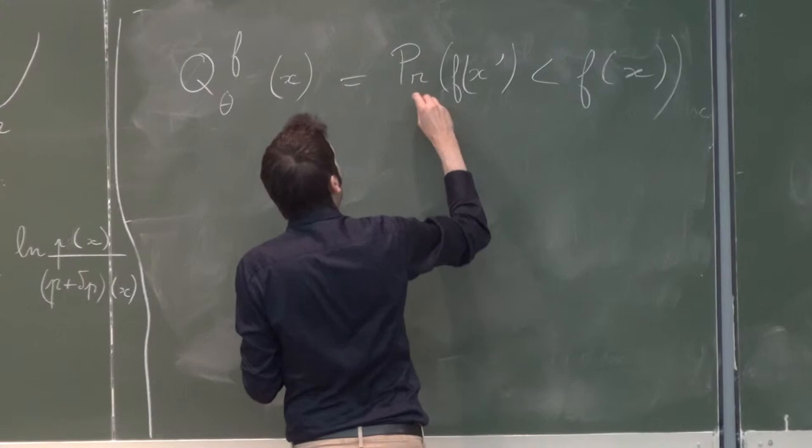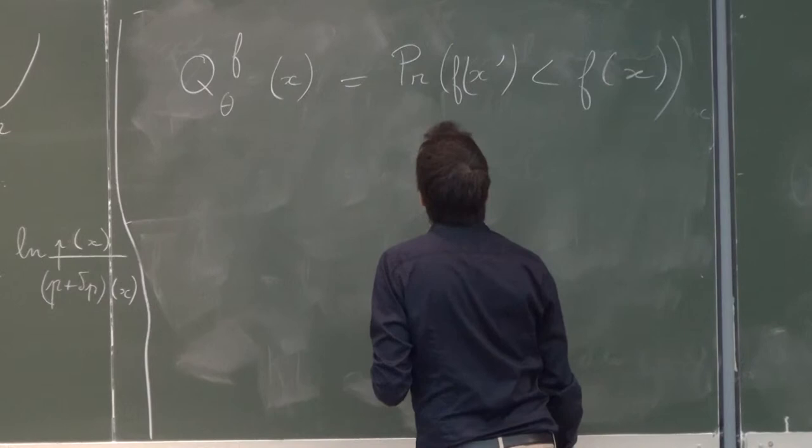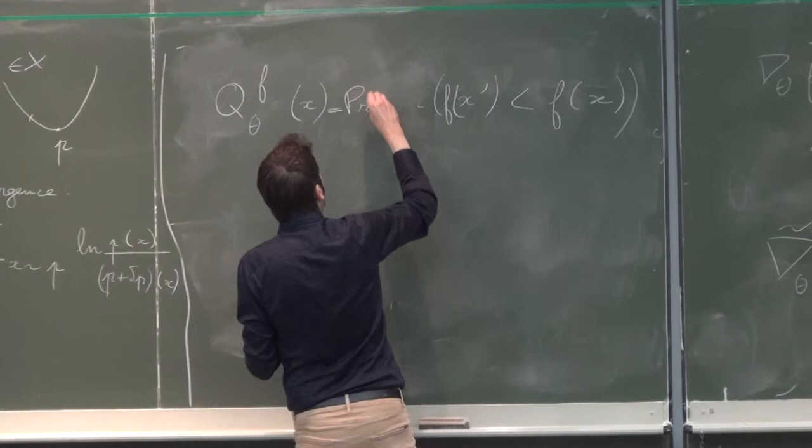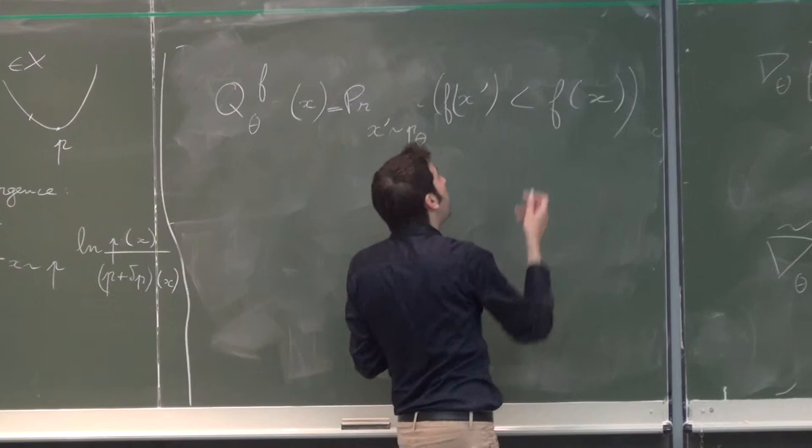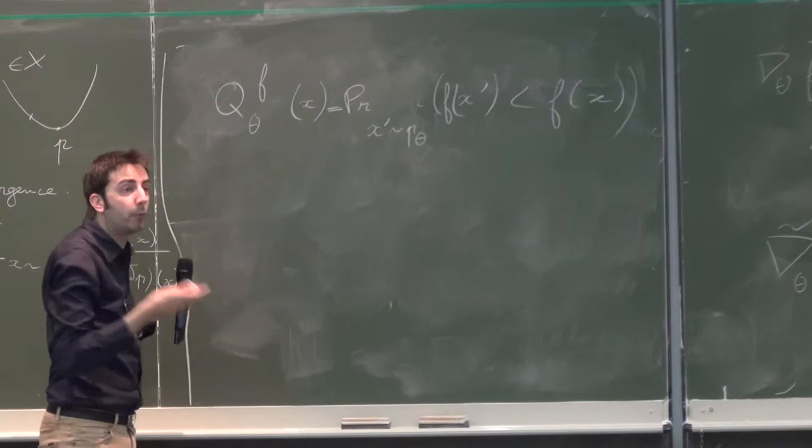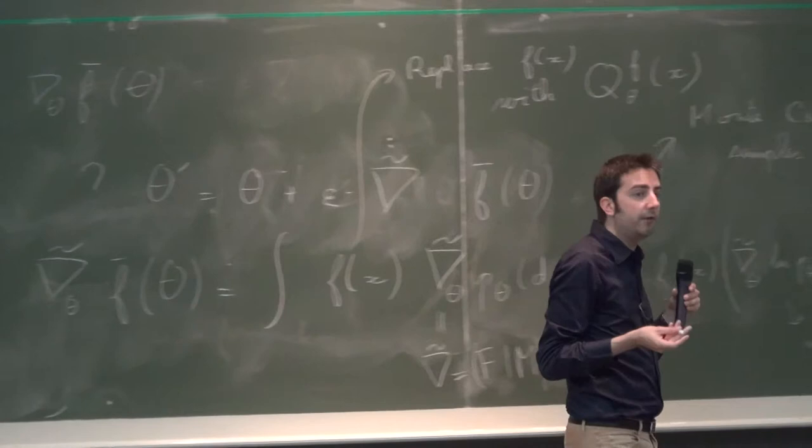So this proportion is taken as probability. This is the probability for x prime following your current beliefs p theta. So the optimum of x, the best x, is going to have a quality of 1, and the worst x is going to have a quality of 0 according to this. And this only depends on the rankings of f. That means that f can take values in an abstract ordered set.